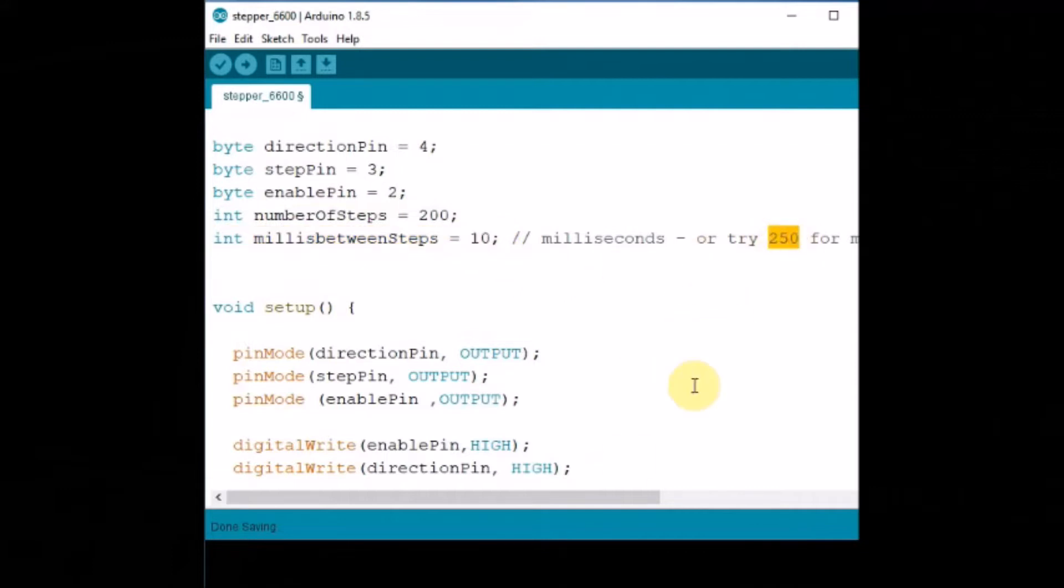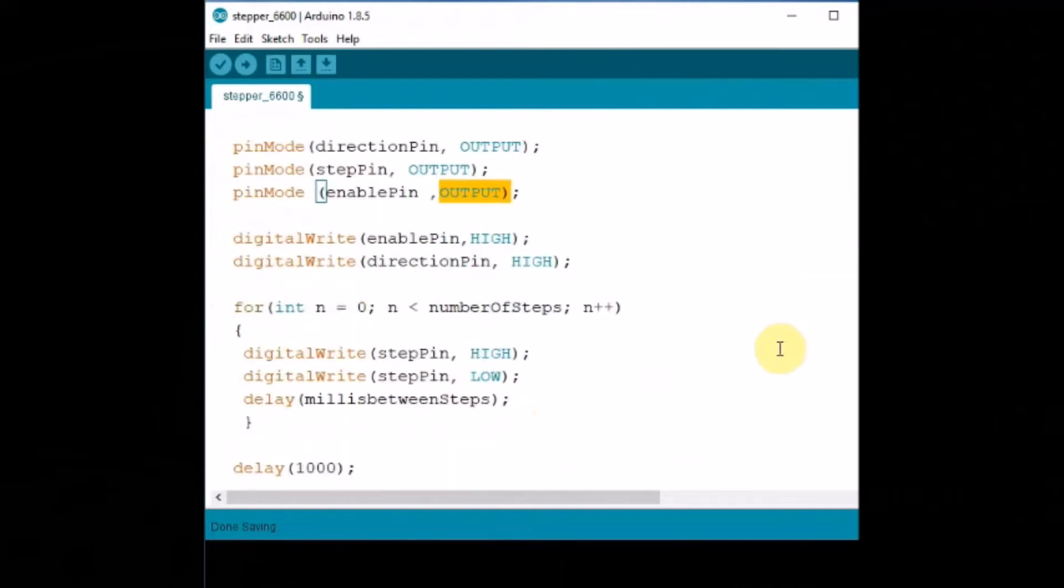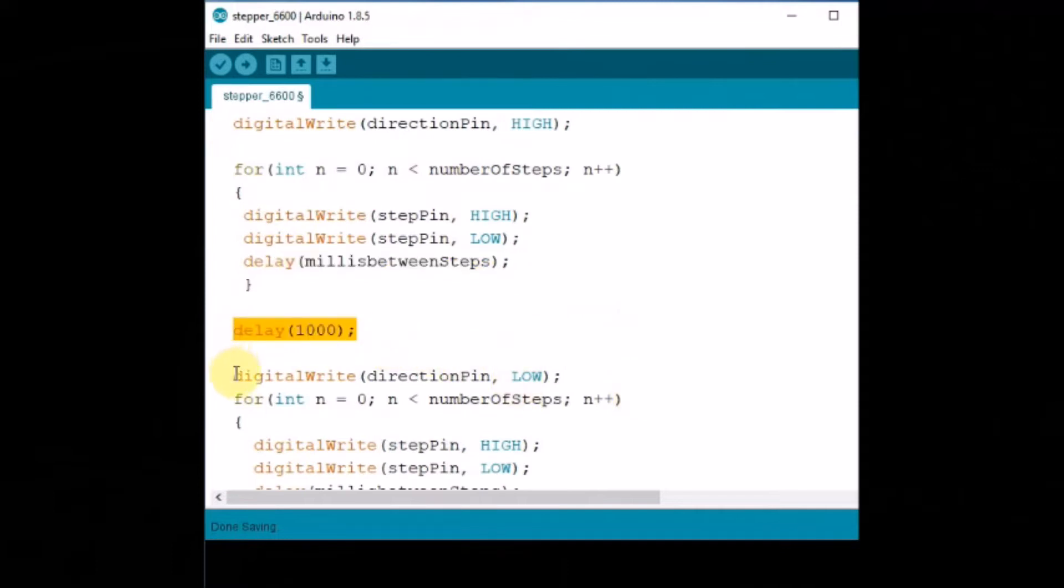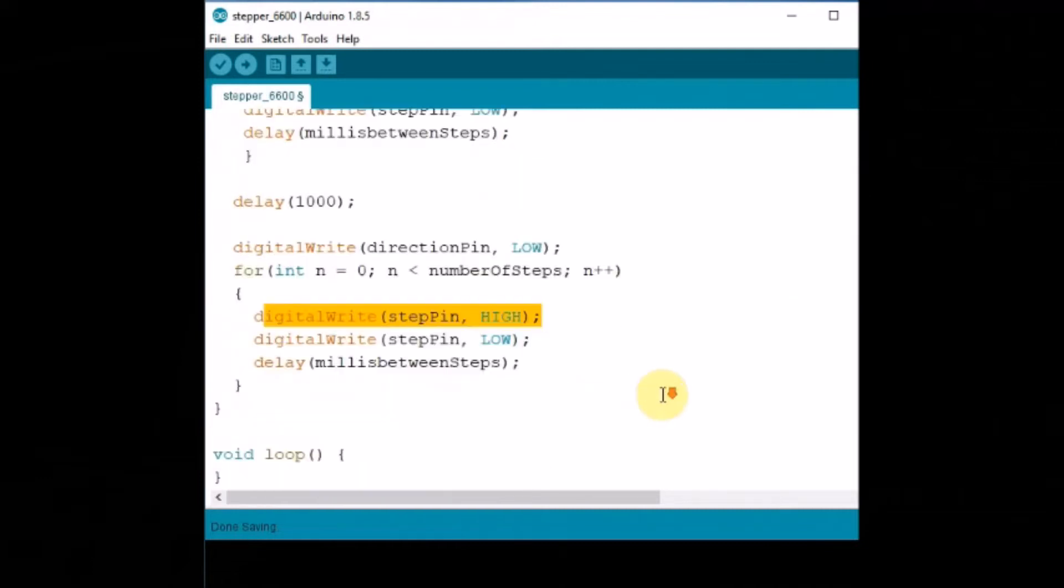Inside void setup, we use pin mode and declare all these pins as output. And we use digital write to make the enable pin high. And then we make the direction pin as high so that the motor rotates clockwise. Inside the for loop, we count from 0 to number of steps. And then make the step pin as high and then step pin as low. Finally we apply the delay, that is millis between steps. And then after a delay, we change the direction by making the direction pin as low. And then again iterate the steps for 200 steps with millis between steps delay.